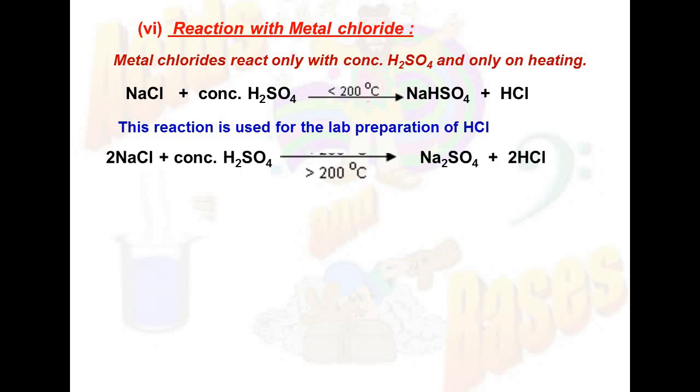But if the temperature of this reaction is above 200 degrees Celsius, then sodium sulfate will be formed along with HCl. Both equations can be used to prepare HCl, but the first equation in which the temperature is below 200 degrees Celsius is used for the lab preparation of HCl from NaCl and concentrated sulfuric acid. Therefore, the first equation is more important.